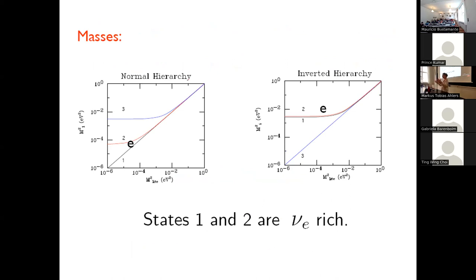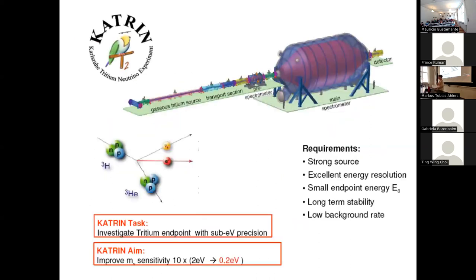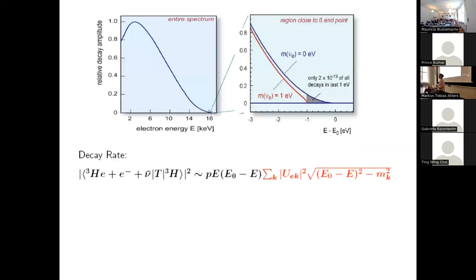If neutrinos are not degenerate — meaning hierarchical — then in normal ordering, all the electron neutrino content is in the lightest states. In inverted ordering, all the electron neutrino content is in the heavy states. This matters because if you plot the three neutrino masses as a function of the lightest neutrino mass squared, you see that if the lightest mass is above ~0.1 eV, the neutrinos are degenerate. If they're hierarchical and the spectrum is normal, the electron neutrino content is in the lightest states; if inverted, it's in the heavy states.